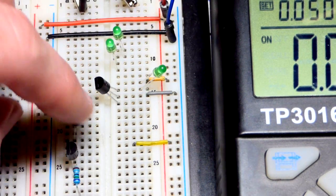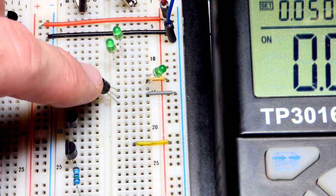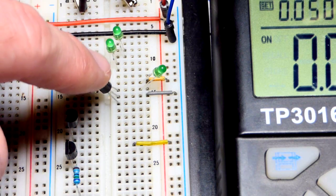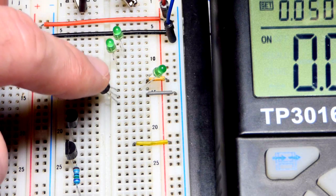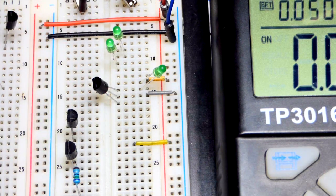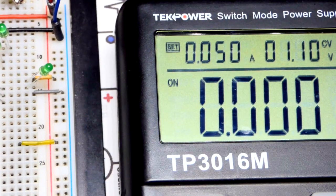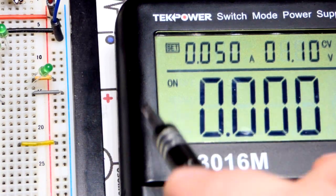Now, that can vary even amongst the same components. So according to the data sheet, it can be anywhere from, I think it was 24, 25 milliamps up to 60 milliamps. So we're going to put three LEDs in parallel.